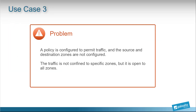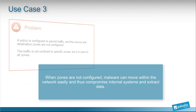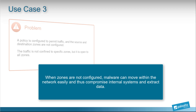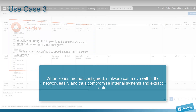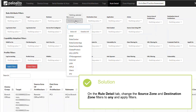A policy configured to permit traffic that does not have source and destination zones configured means traffic is not confined to specific zones but is open to all zones. If zones are not configured, malware can move between zones within the network, which makes it easy to compromise internal systems and extract data out of the network.